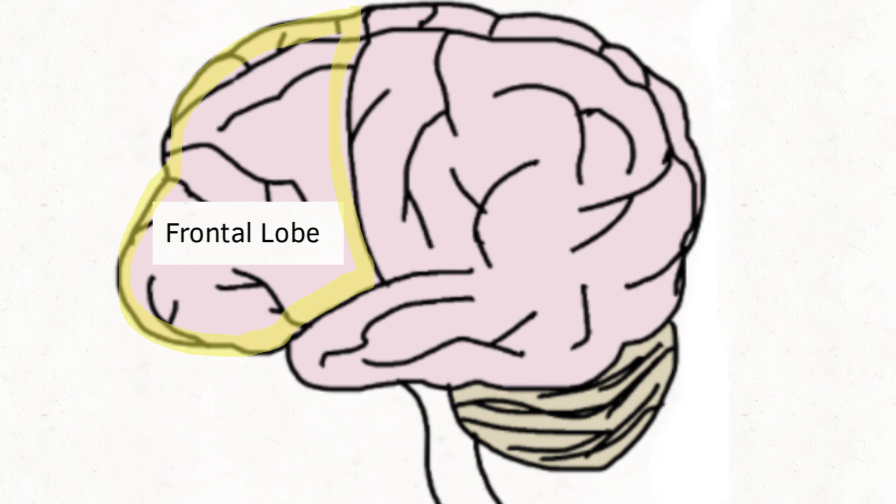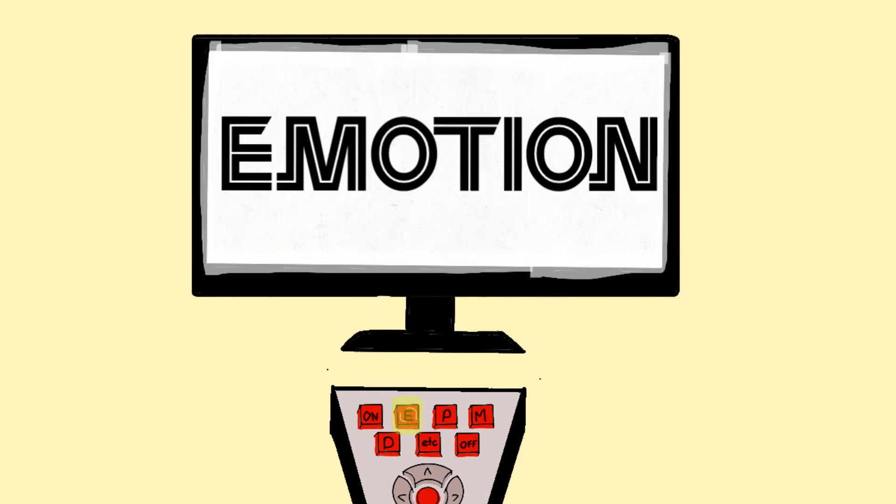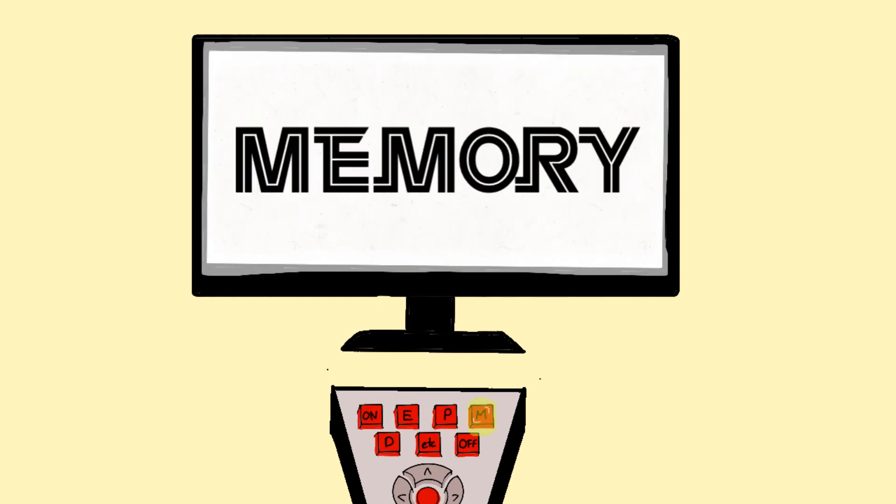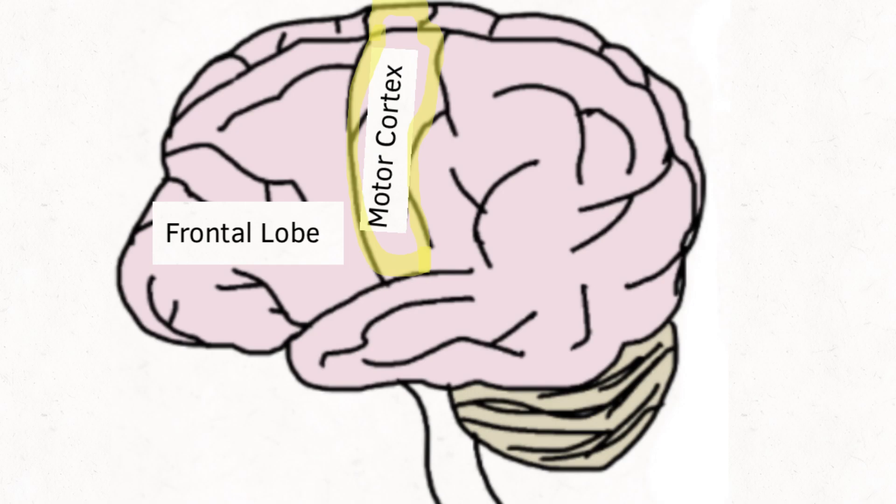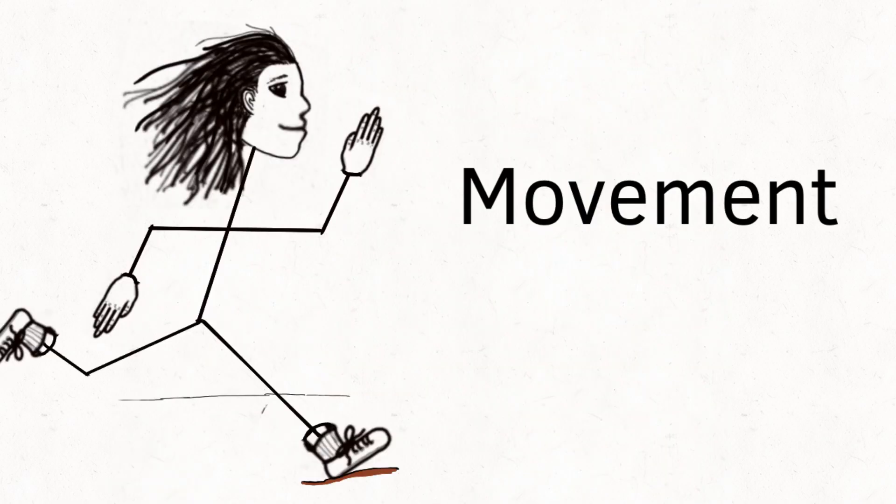The frontal lobe is our remote control for emotion, personality, memory, decision-making, and more. The motor cortex is responsible for movement.